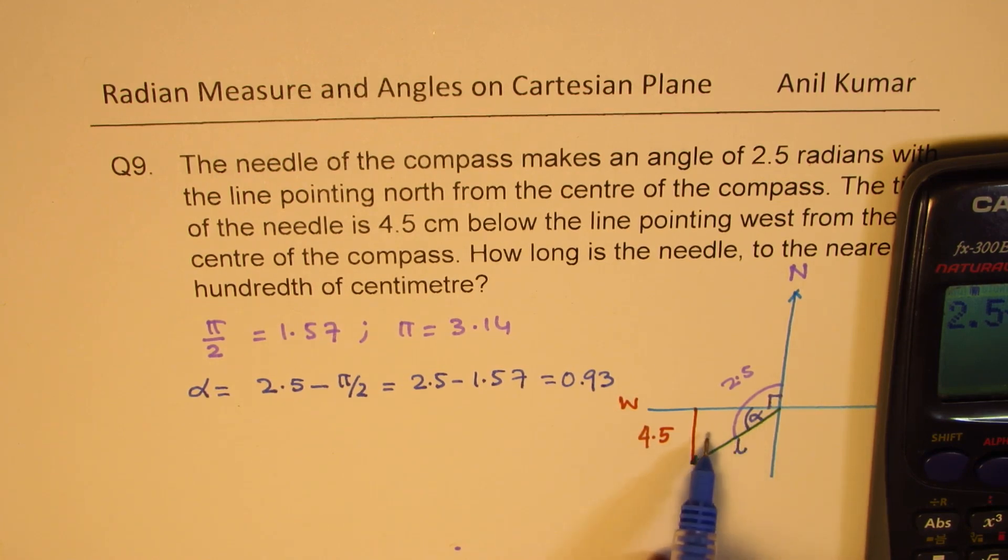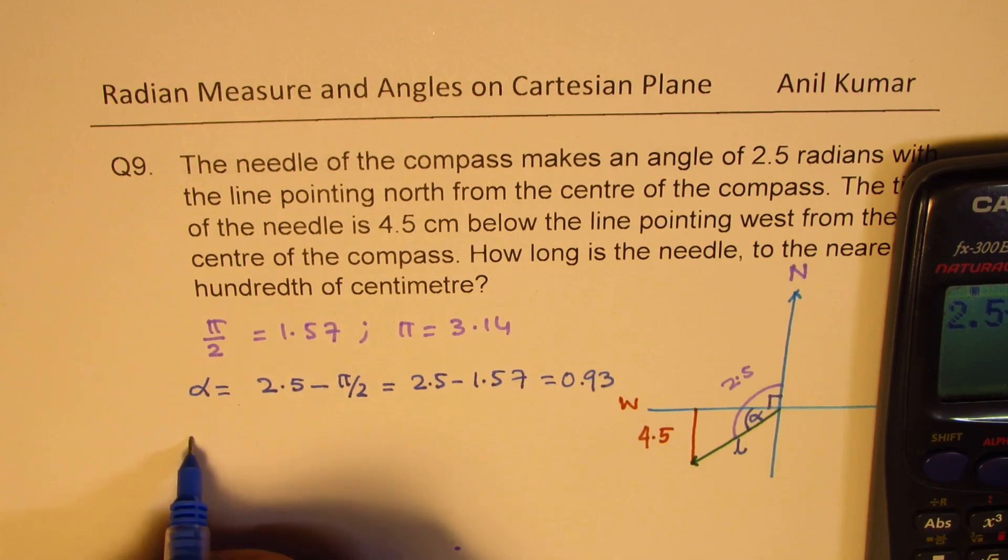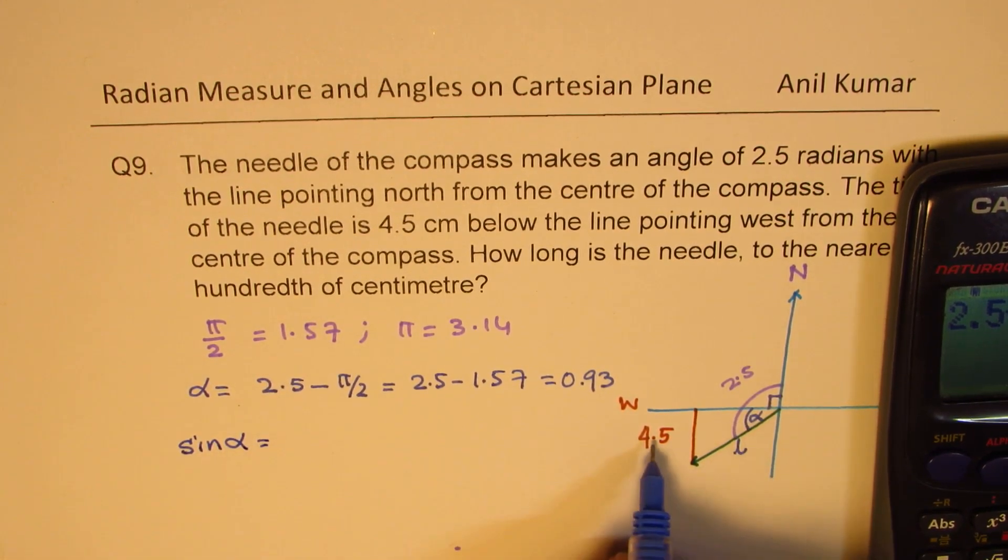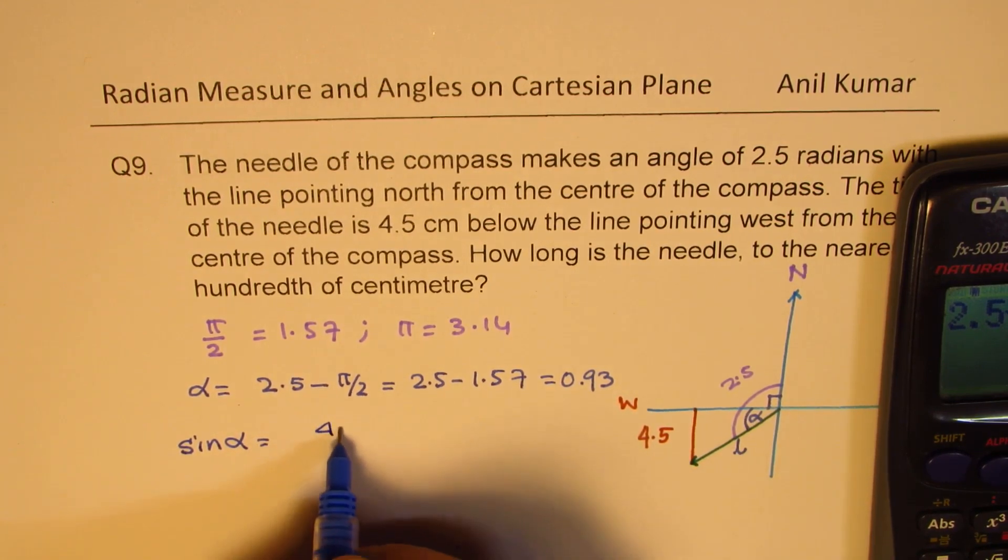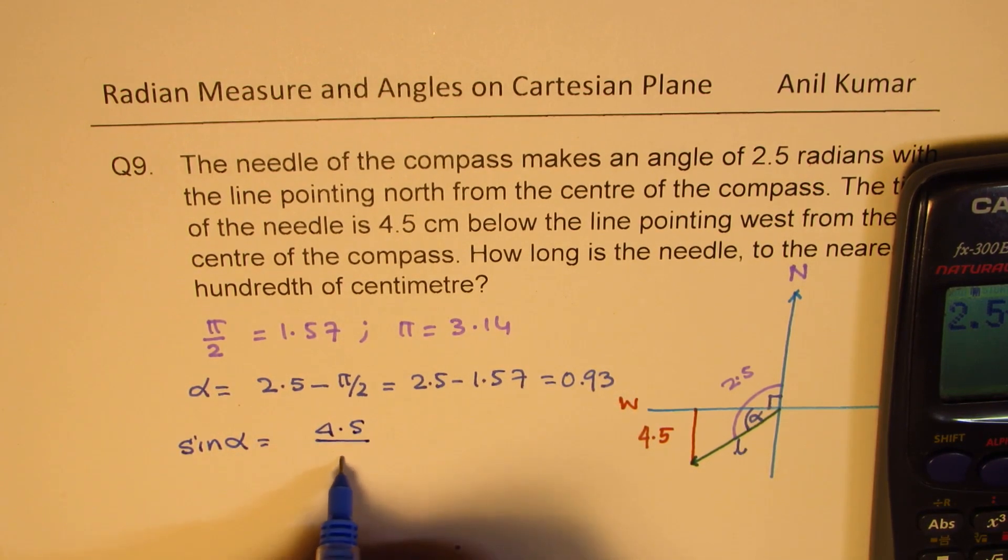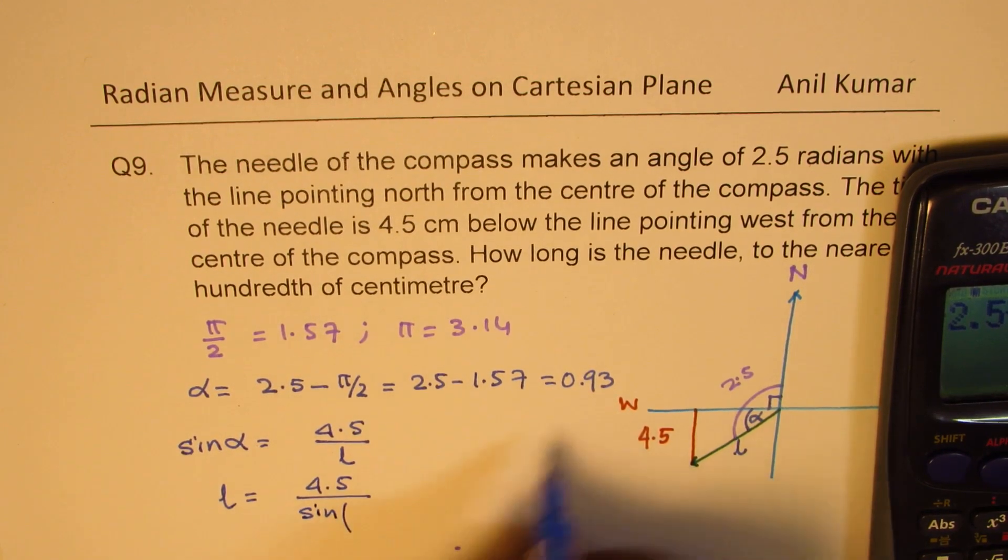Now, in this triangle, we have the opposite and the hypotenuse, and therefore, we could use sine alpha. So, sine alpha is opposite side over hypotenuse, which is 4.5, and the length which we need to find. So, length L is equal to 4.5 divided by sine of this angle, 0.93.